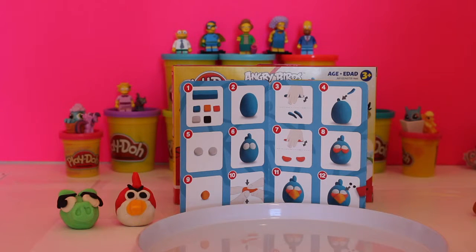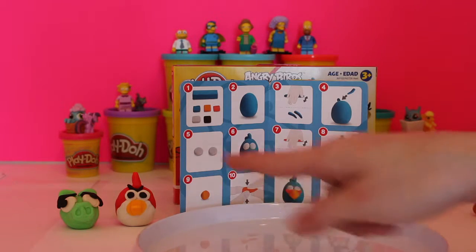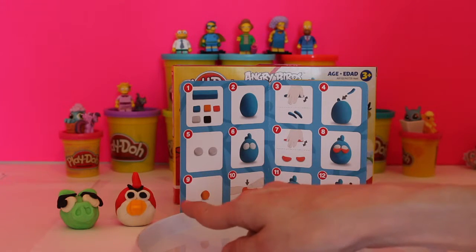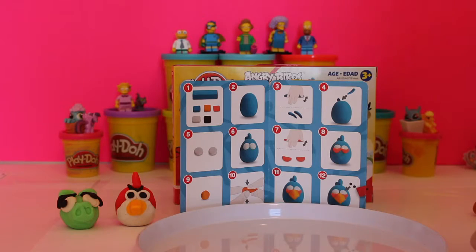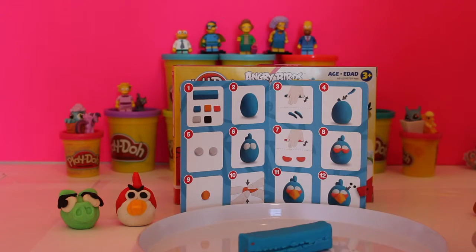Welcome back my Giggle Room kiddos. We are doing part two of the Angry Birds. We've already done one of the pigs and the red Angry Bird, so now we're going to do the blue one and the yellow one.